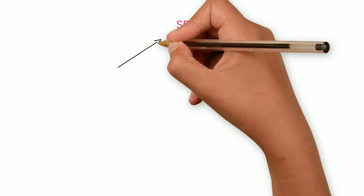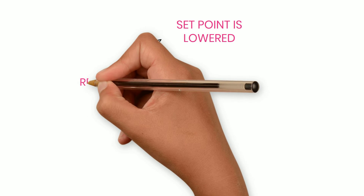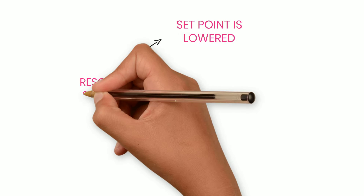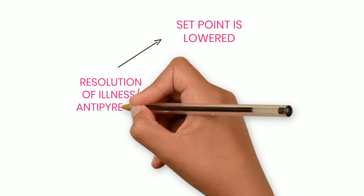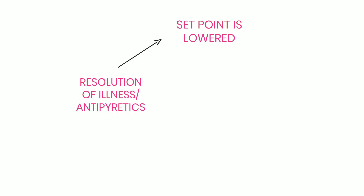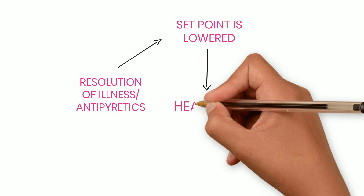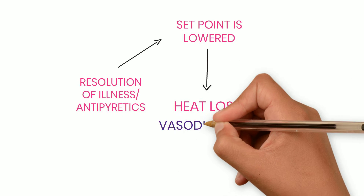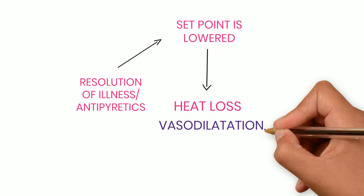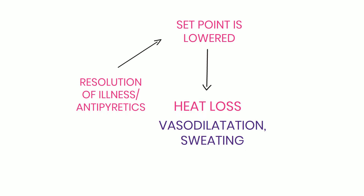When the hypothalamic set point is lowered — either due to resolution of illness or due to antipyretics — heat loss takes place by vasodilatation and sweating, resulting in the body temperature returning to normal.